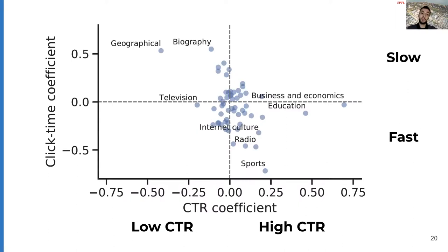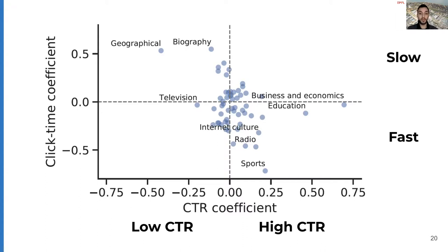We repeated the approach by replacing the target variable with interaction speed. The resulting coefficients allow us to inspect in two dimensions the relation of each topic with engagement in terms of both volume and speed. For example, we can see from this plot that sports is associated with fast clicks and high click-through rate, while geographical content tends to have low click-through rate and slow clicks.